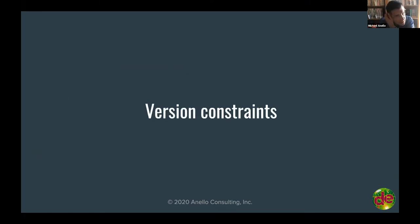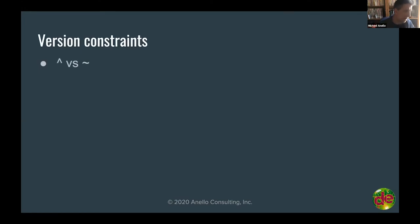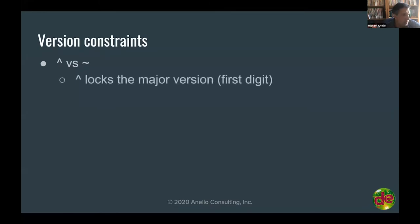Let's talk about the caret versus the tilde. I teach a lot of folks how to use Drupal and Composer, and this is a little bit of a gray area. Simply put, when you use the caret when specifying a version constraint — something like `^1.0` — this locks the first digit. So when you do a `composer update` with a constraint of `^1.0`, that will allow you to get any release version of version one: 1.3, 1.4, 1.5 — but the caret locks in that first digit, so you won't be able to get version 2 unless you change the version constraint.